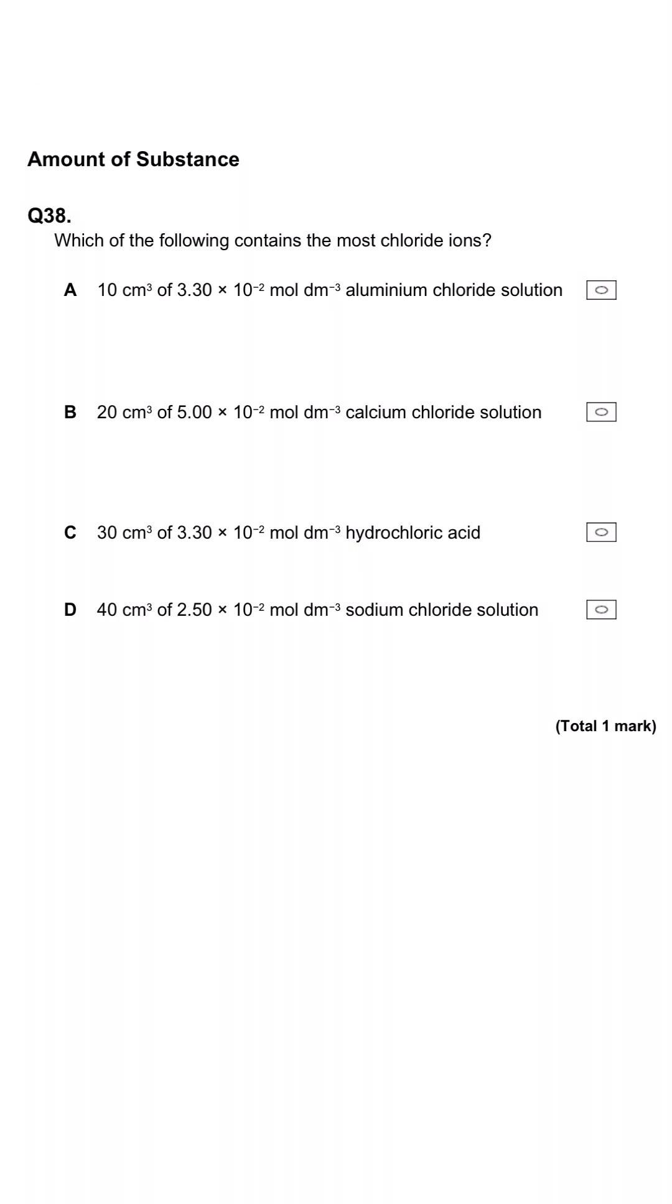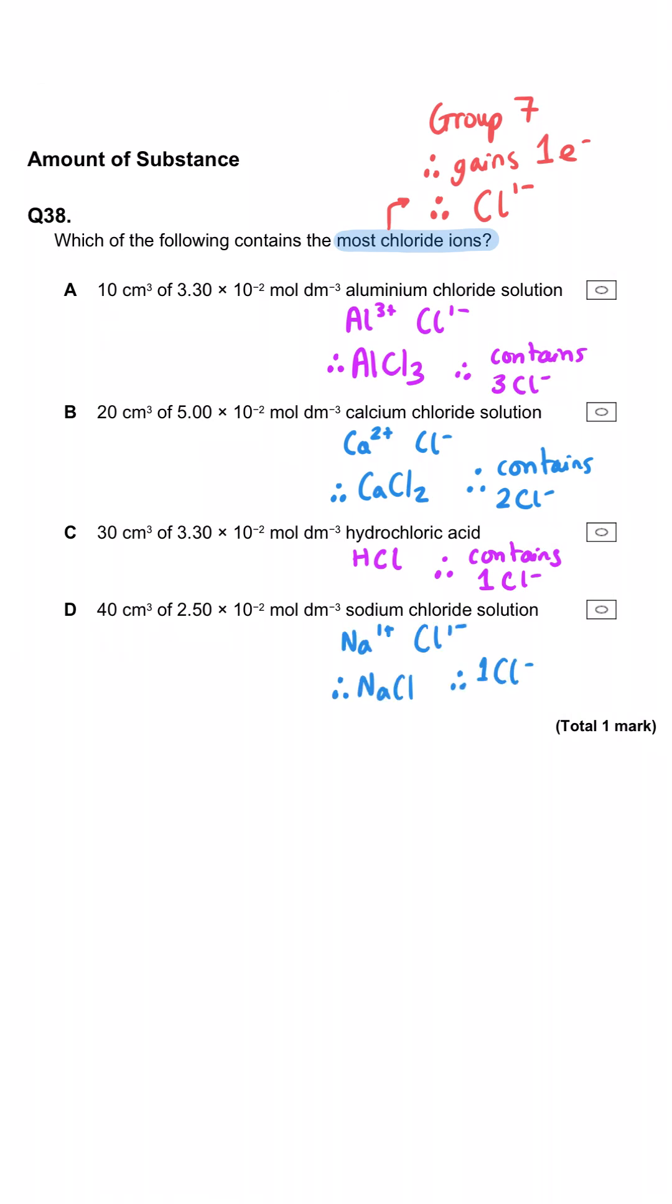Here we're being asked which of the following contains the most chloride ions. To solve this problem, we need to first recognise that chloride ions are Cl- and so aluminium chloride will be AlCl3 because aluminium is in group 3 and so will be a 3 plus ion. Calcium is in group 2, so it will be 2 plus as an ion. So calcium chloride is CaCl2.